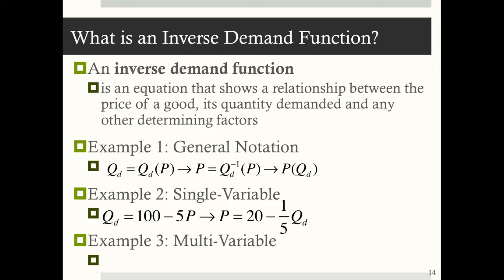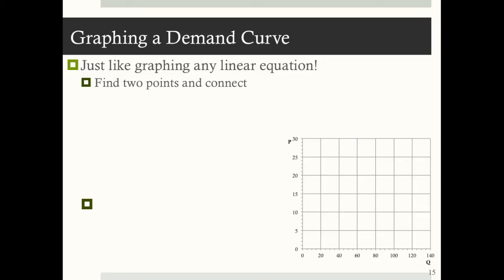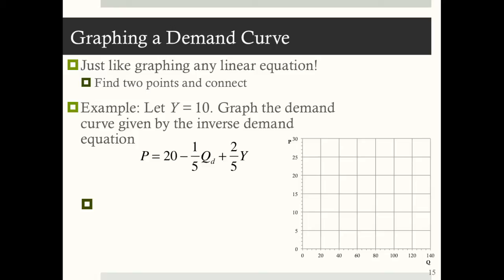For example, starting with the demand curve Q sub D equals 100 minus 5P, an inverse demand curve is found by rearranging to solve for P, giving P equals 20 minus one-fifth times Q sub D. We can do the same with multi-variable functions — we just need to get P on the left-hand side. The inverse demand function corresponding to the multi-variable case would be P equals 20 plus two-fifths times Y minus one-fifth times Q sub D.